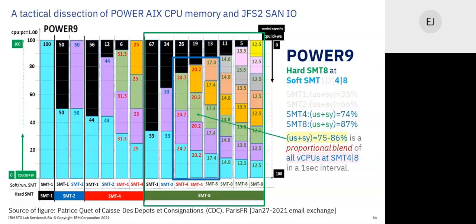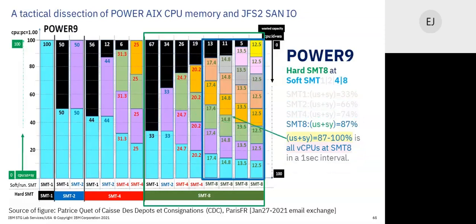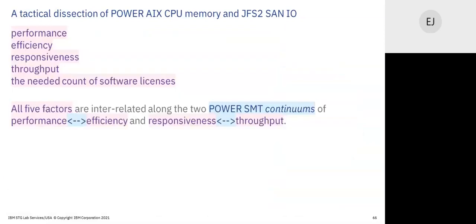If your user plus system is 87 percent and higher, you're mostly all SMT8 — that doesn't mean eight threads per eight logicals, it means mostly in SMT8 mode with five, six, seven, or eight threads running on them in a one-second interval. Tom: One question was whether it's possible to monitor what the SMT mode is if it's changing dynamically. Earl: It is — that's the next session.